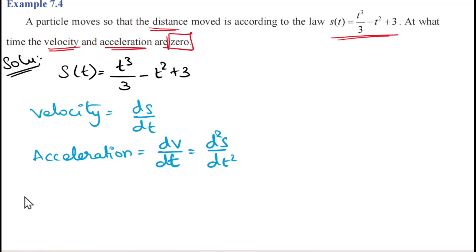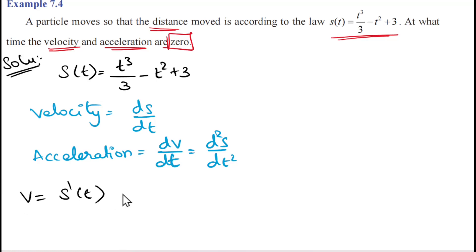Velocity v is equal to s'(t), that means ds/dt. Now we will differentiate s(t) to find the velocity.